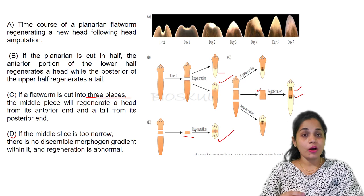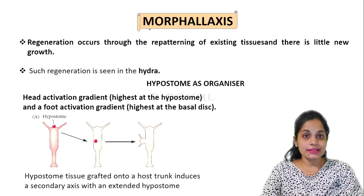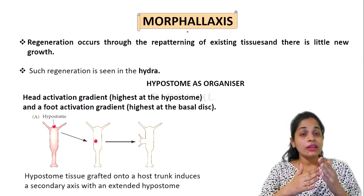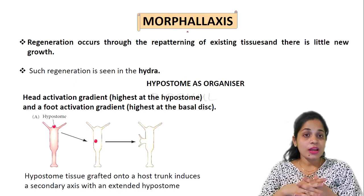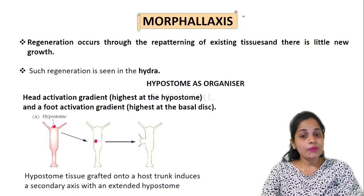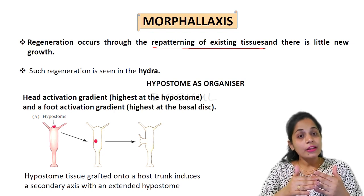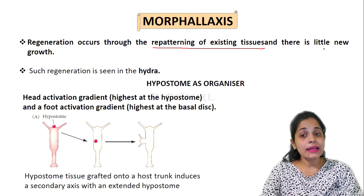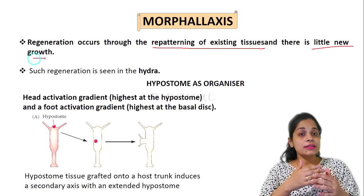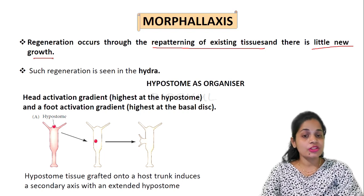This is an example of stem cell mediated regeneration found in planarians. Now, the next type of regeneration is morpholaxis. The definition of each type of regeneration is very important because questions are sometimes asked from the definitions. Morpholaxis is the type of regeneration that occurs through repatterning of existing tissue with little new growth.